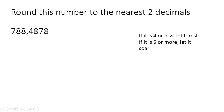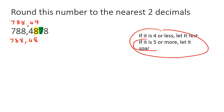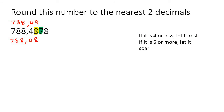Let's do two more examples. This one says to the nearest two decimal places. Your possible answers could be 788,49 or 788,48, removing trailing zeros. Now to work out the answer, you look at the decimal on the right and apply the rule. If it is 5 or more, let it soar — so this number is going to go up to a 9. The final answer is 788,49.